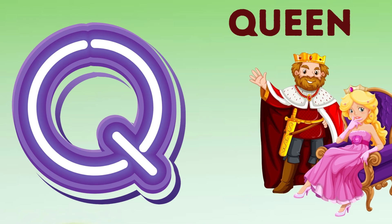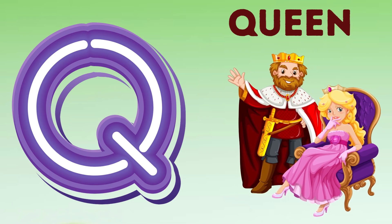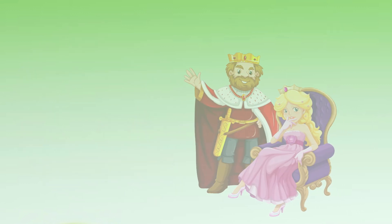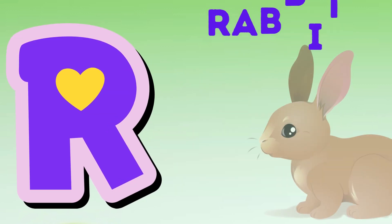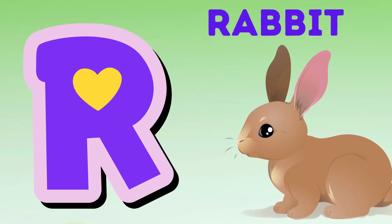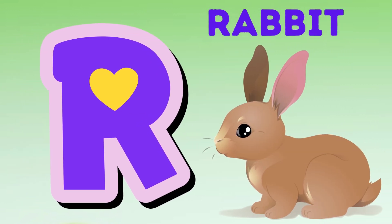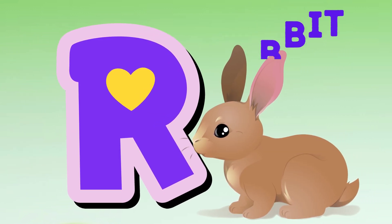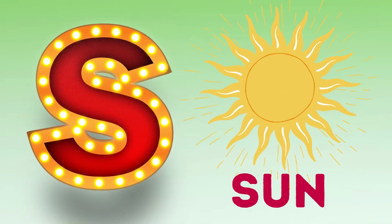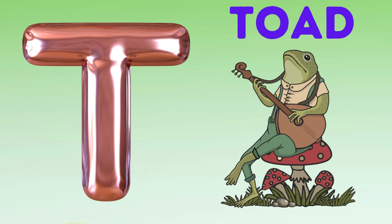Q is for queen, qu-qu-queen. R is for rabbit, r-r-rabbit. S is for sun, s-s-sun. T is for toad, t-t-toad.